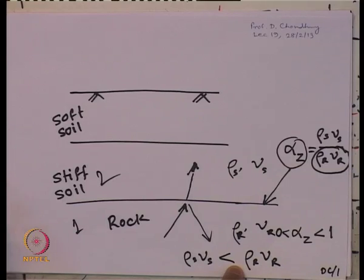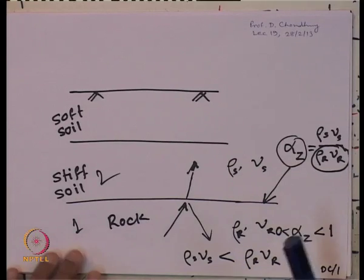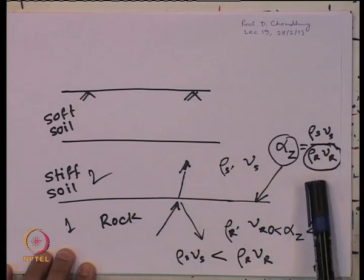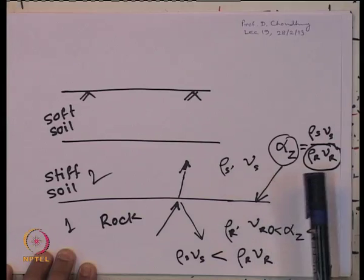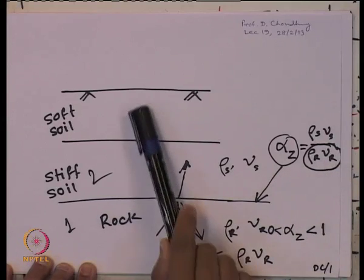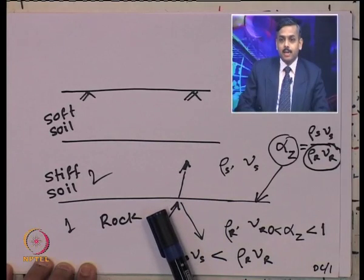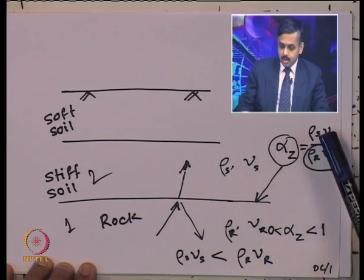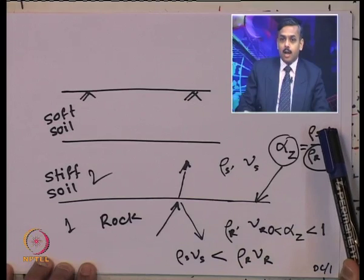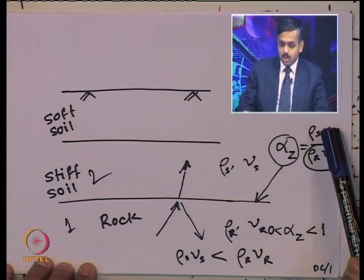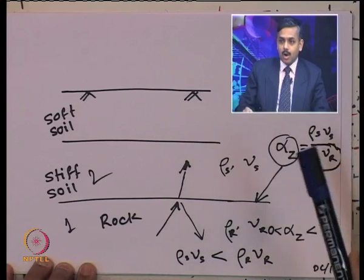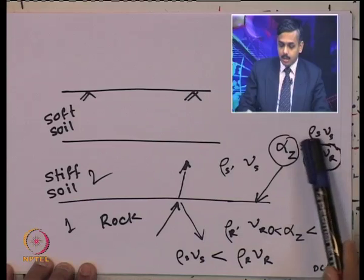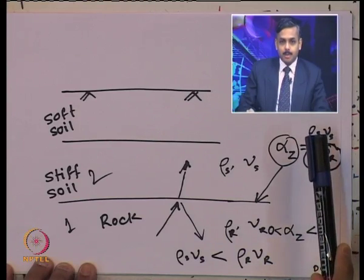Let us do a quick recap of what we had learnt in our previous lecture. I had made derivations of various expressions like what is called specific impedance of a particular soil media or any material. The specific impedance ratio is defined as the density times the velocity of the seismic wave — it can be shear wave or primary wave, depending on what type of wave velocity we are considering. The product of that is the specific impedance of a particular layer.